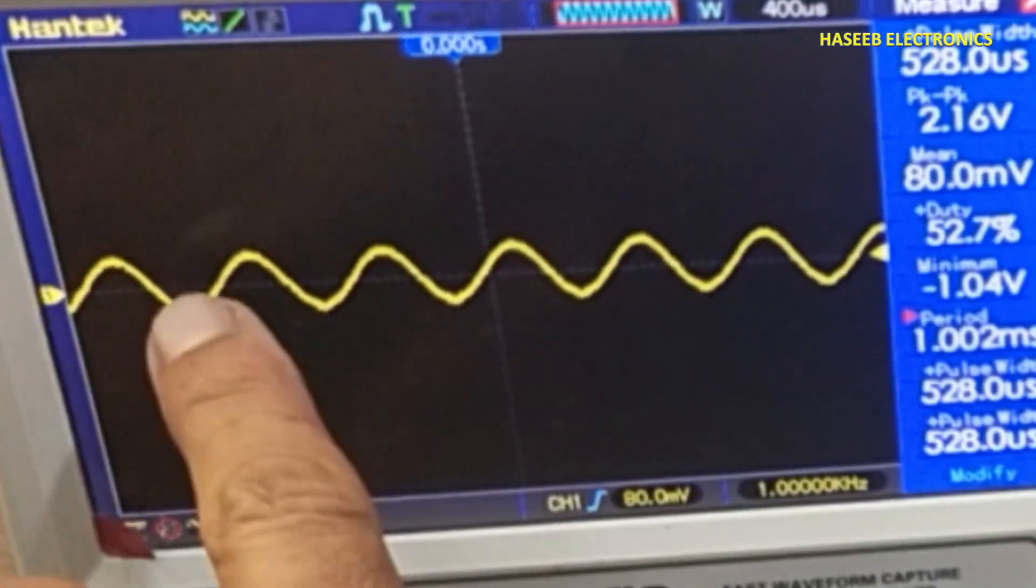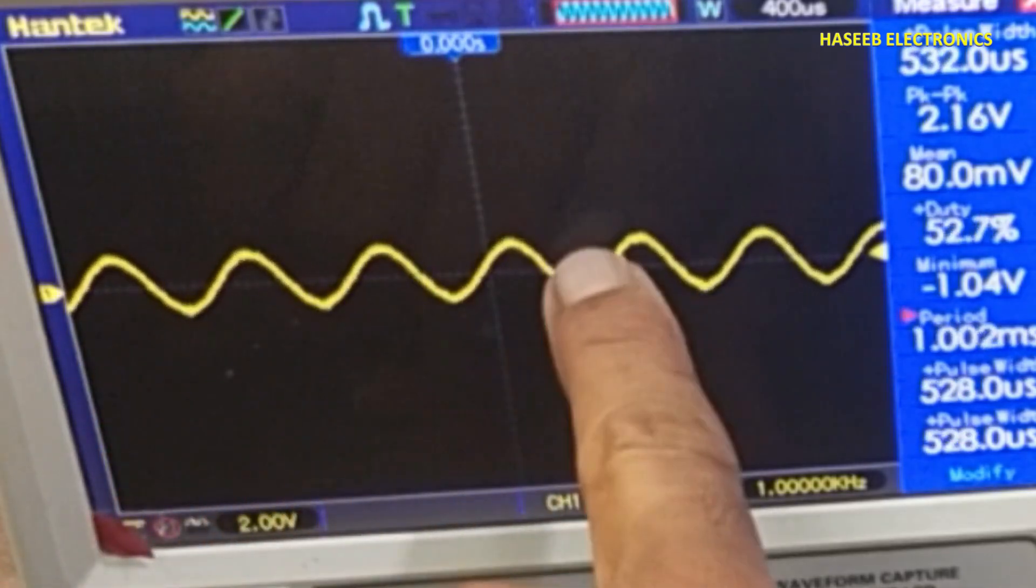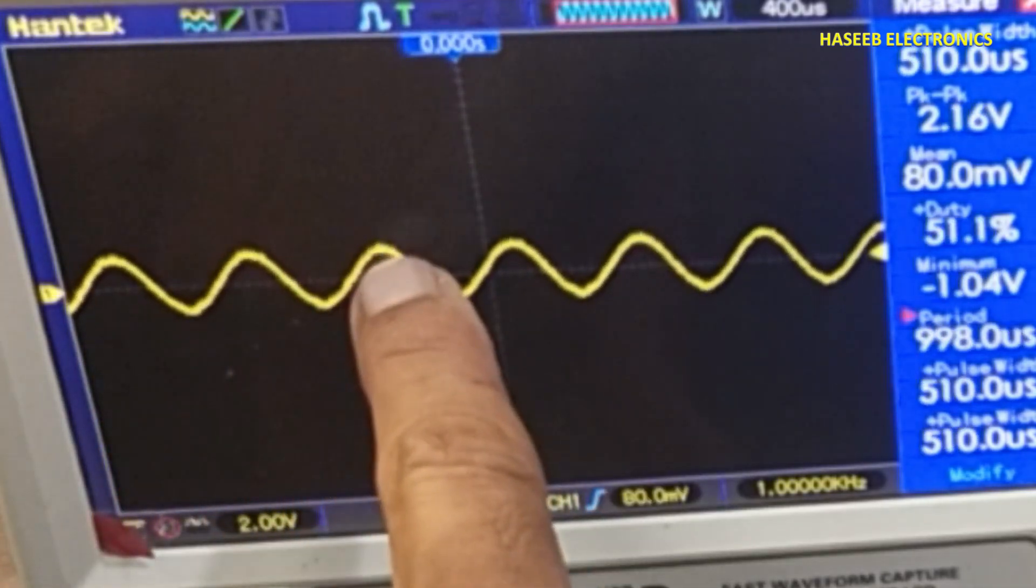If we monitor this signal, it is now exactly at zero line. Half cycle is in top side and half cycle in bottom side.